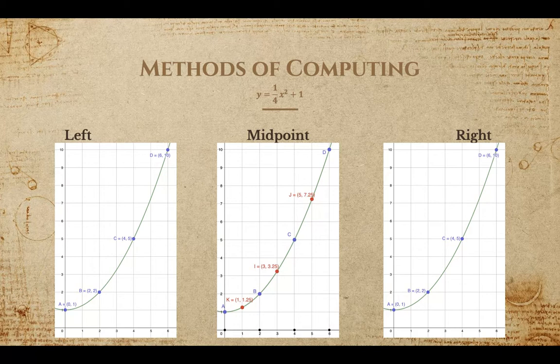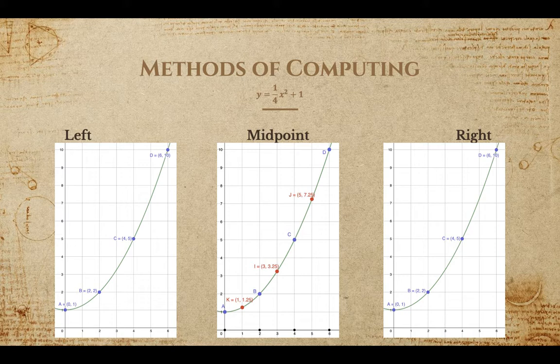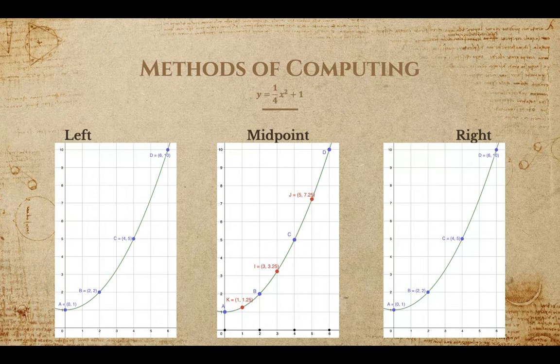So there are three main ways of computing Riemann sums. I'm going to walk you through left, midpoint, and right approximations for the function y equals one-fourth x squared plus one, where a is zero, b is six, and n is three.